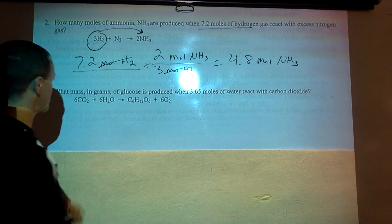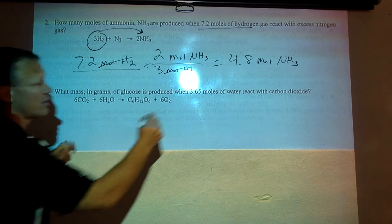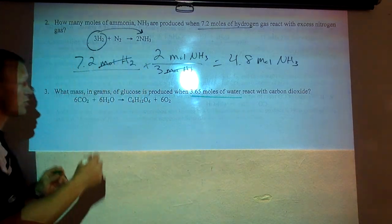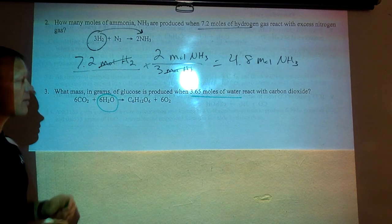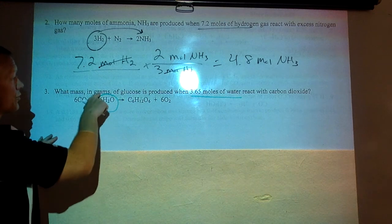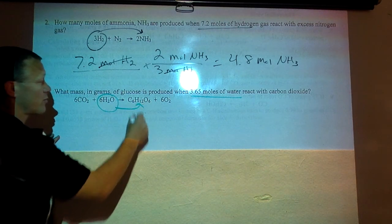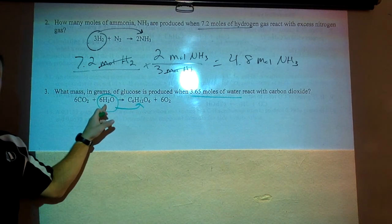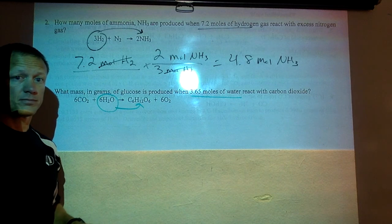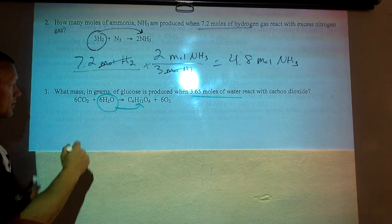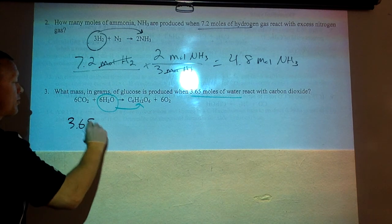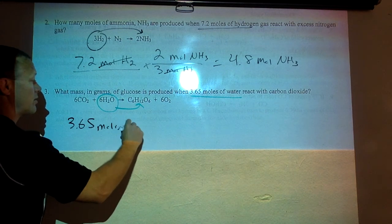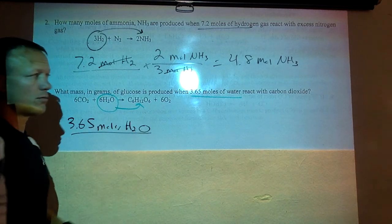Second one, number three, is giving us moles of water. So it's telling us the moles of water and we're going to grams of glucose. It wants to know how many grams of glucose can be made from a certain number of moles of water. So same pretty much steps. We're going to start with our 3.65 moles of water.